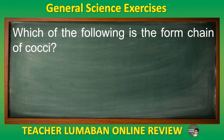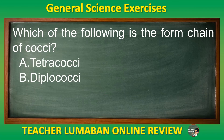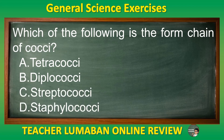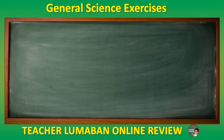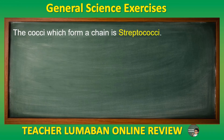Which of the following cocci form a chain? Letter A: Tetracocci. Letter B: Diplococci. Letter C: Streptococci. Letter D: Staphylococci. The correct answer is Letter C: Streptococci. The cocci which form a chain are Streptococci.